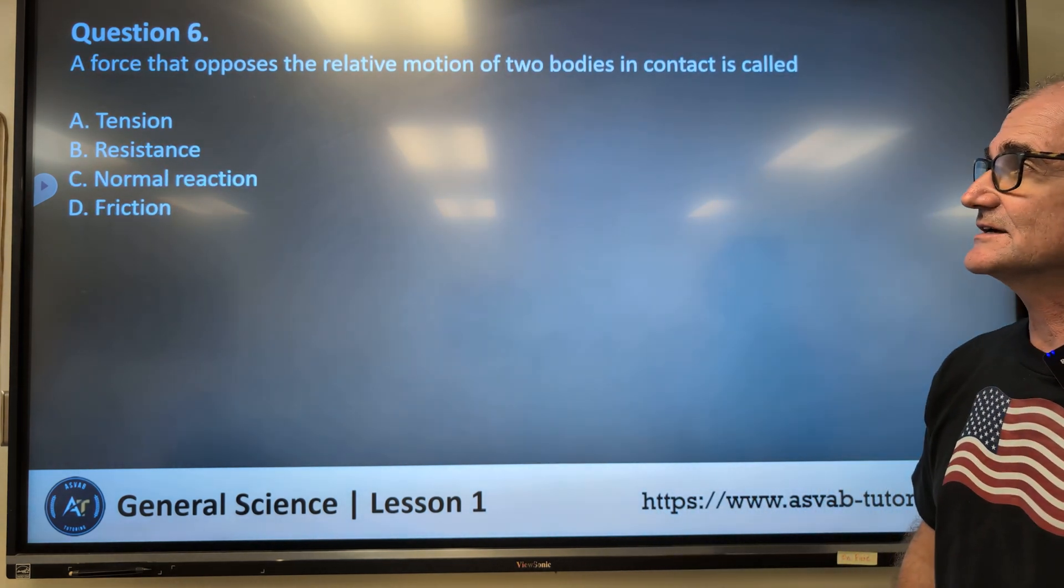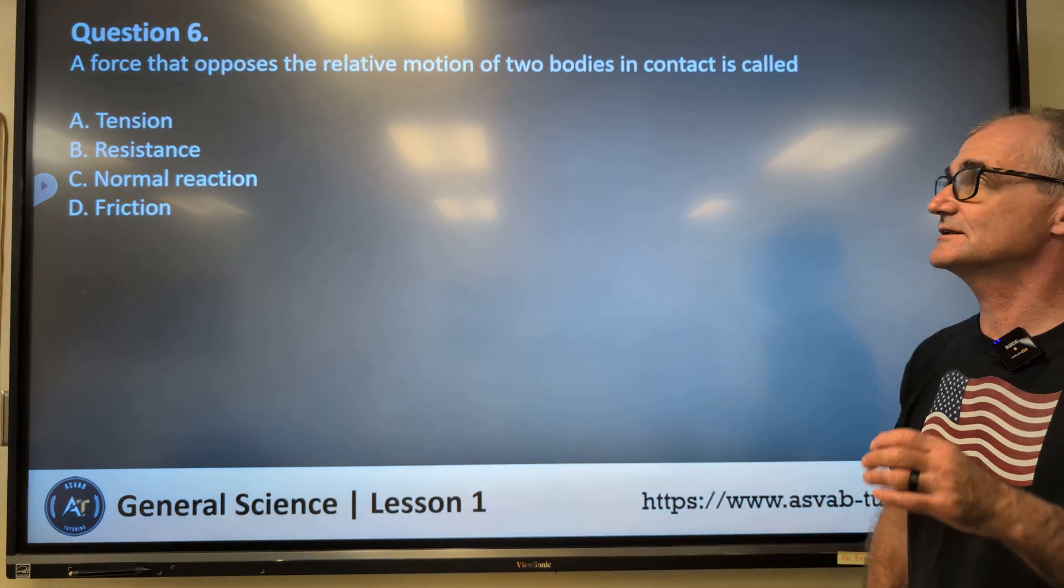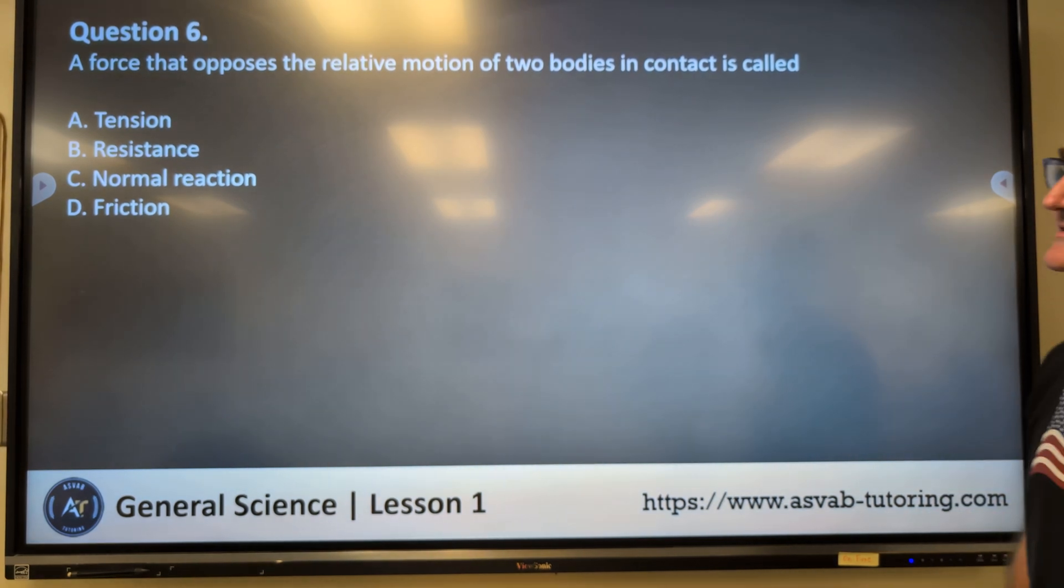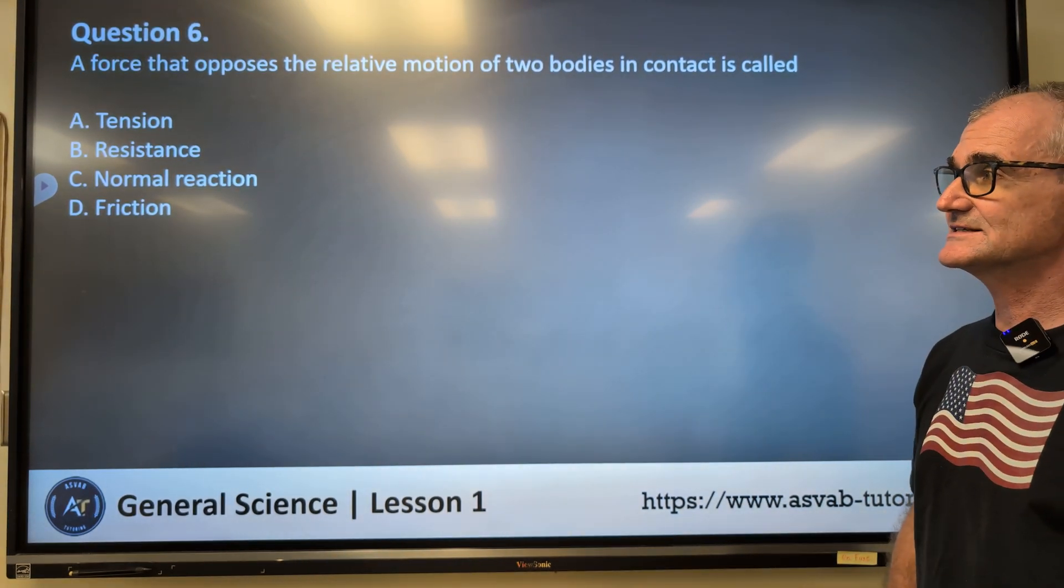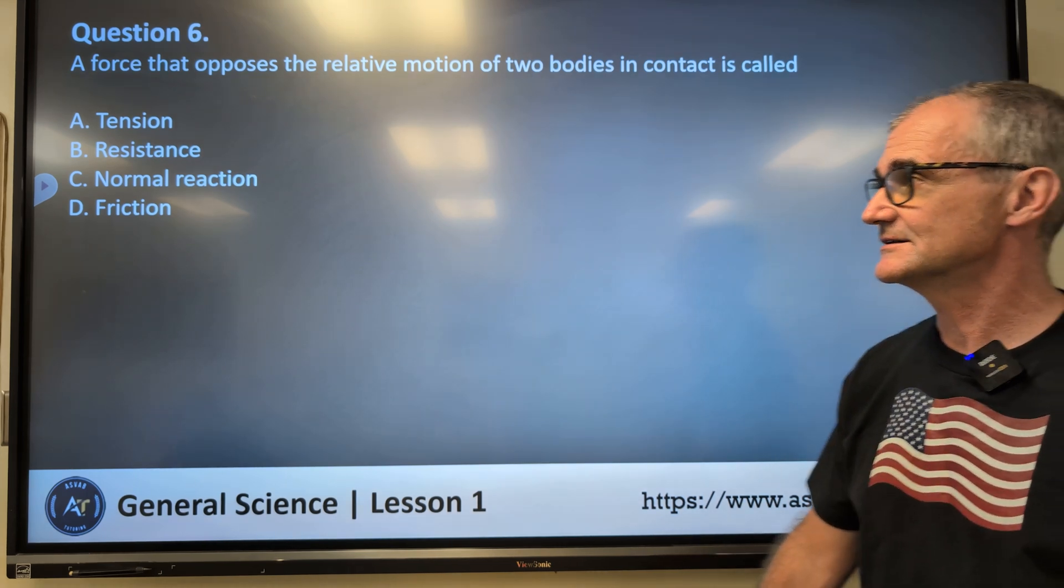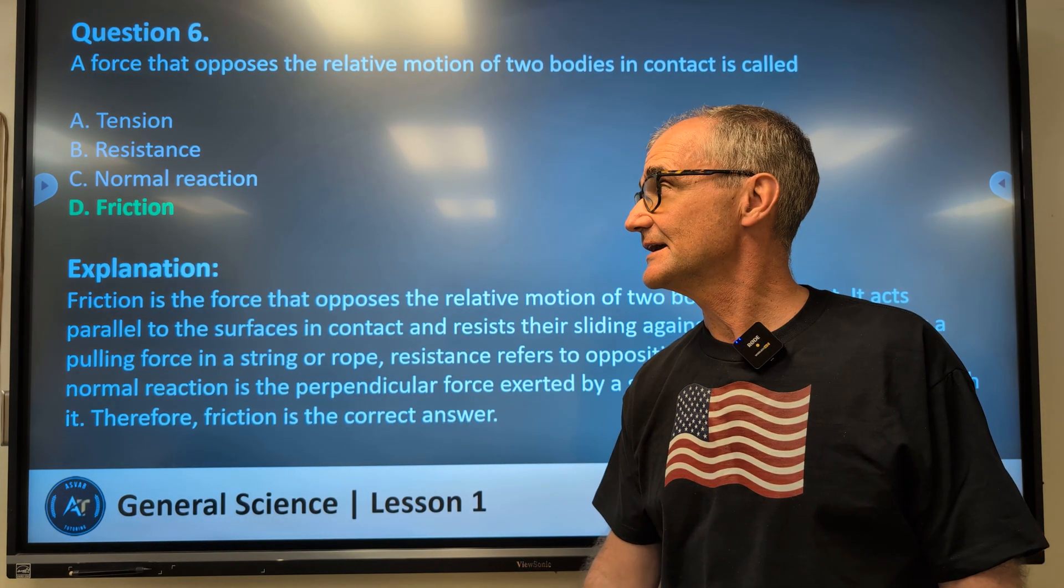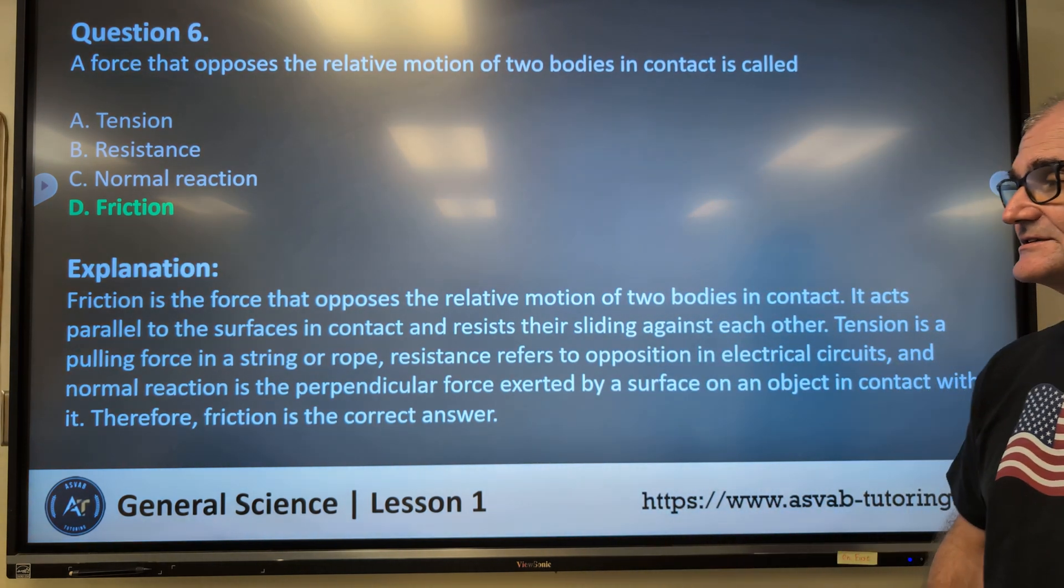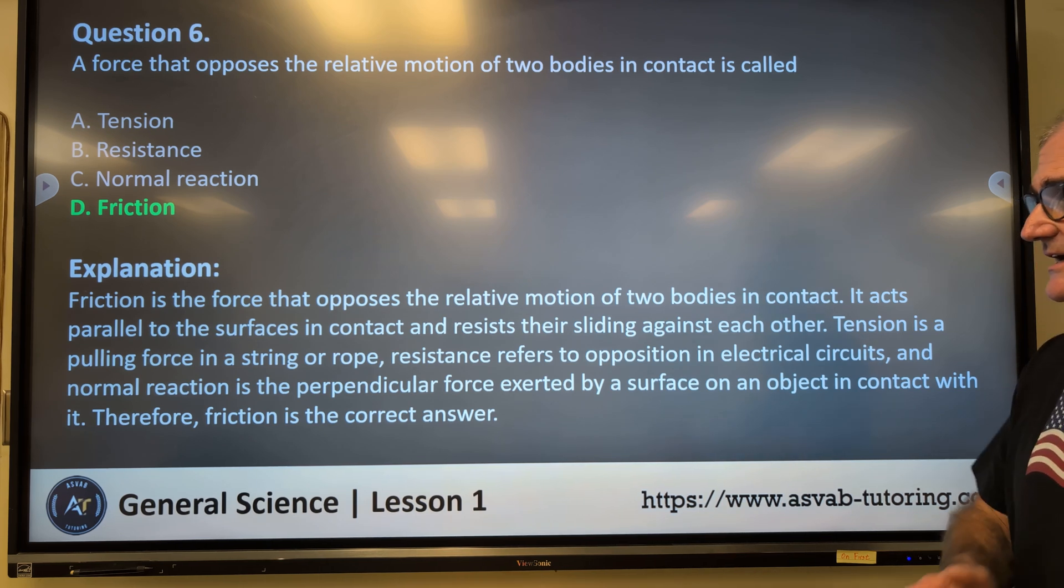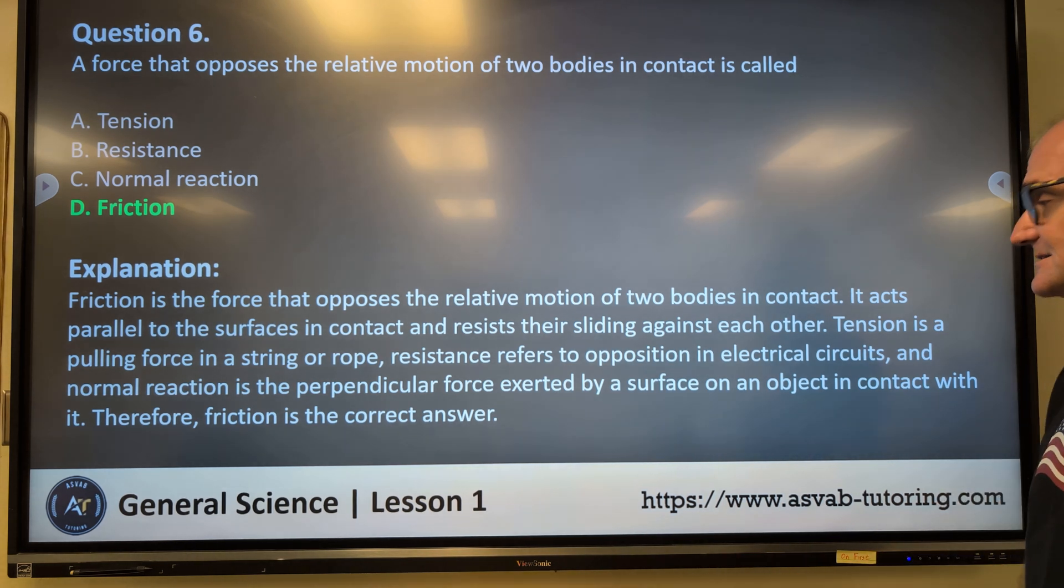Number six. A force that opposes the relative motion of two bodies in contact is called tension, resistance, normal reaction, friction. Correct answer, answer D, friction. Friction is the force that opposes the relative motion of two bodies in contact. It acts parallel to the surfaces in contact and resists their sliding against each other.